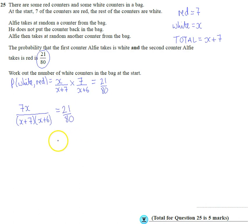So we're obviously going to have to solve this equation. I'm going to multiply the left numerator by 80 and the right numerator by this. So 7X times 80 is 560X. And on the right hand side we're going to get 21 lots of whatever we get when we expand this double bracket.